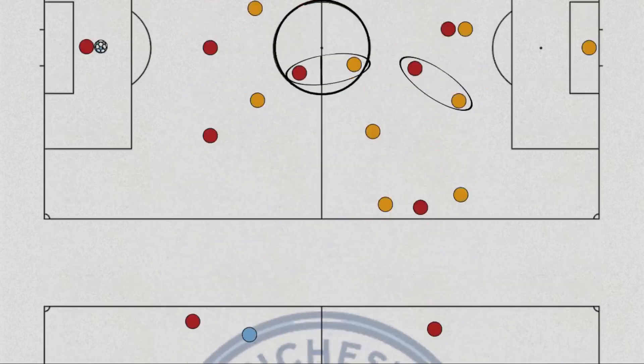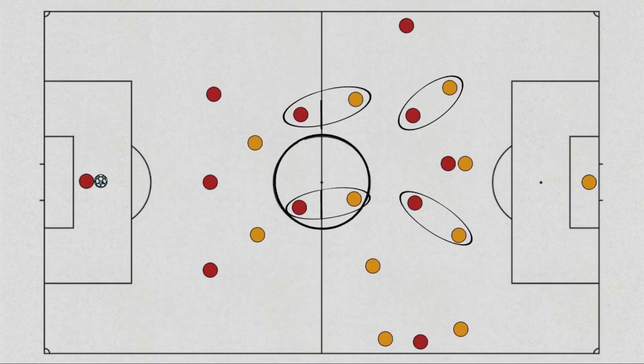If Ten Hag wants to use Guardiola tactics, that's fine, but we only looked dangerous in the game when Shaw and Wan-Bissaka got into wide areas.